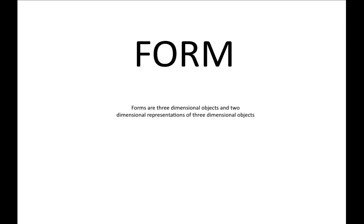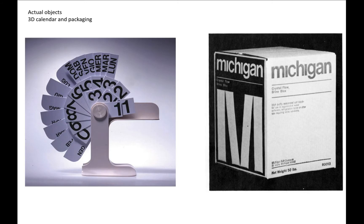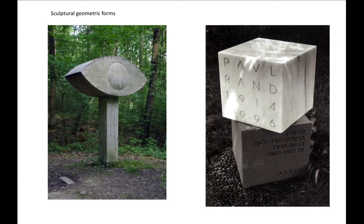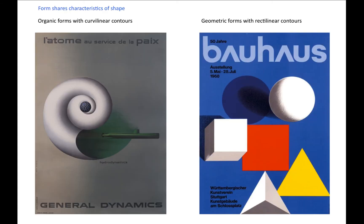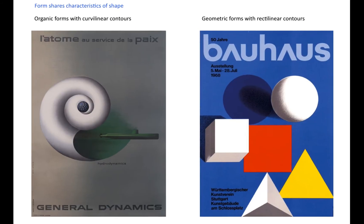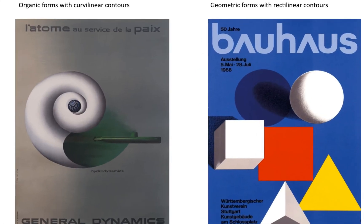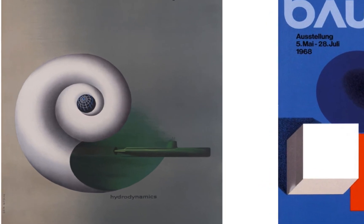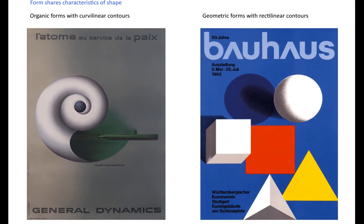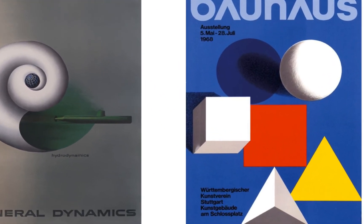Form. Forms are three-dimensional objects and two-dimensional representations of three-dimensional objects. Here are a couple of examples of actual objects — a 3D calendar and some packaging. Sculptural geometric forms. Form shares characteristics of shape. Organic forms with curvilinear contours. Geometric forms with rectilinear contours.